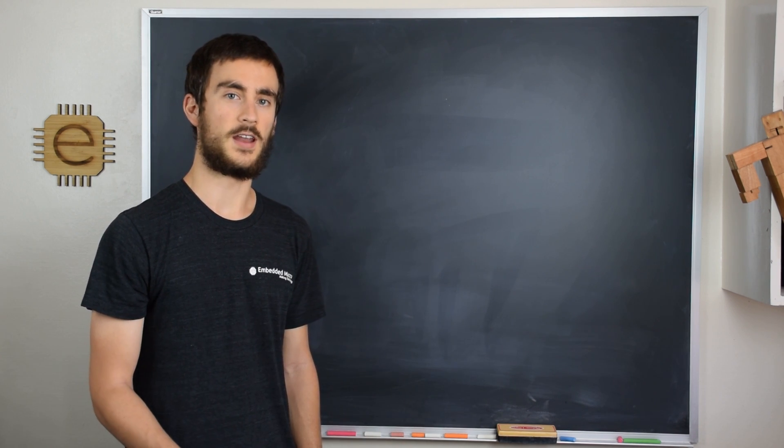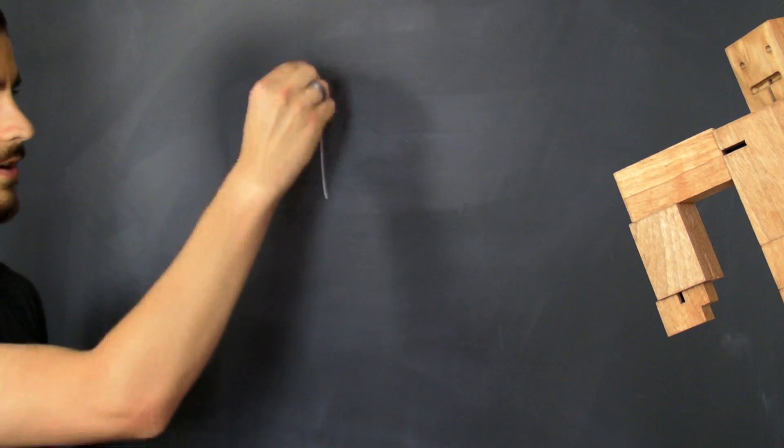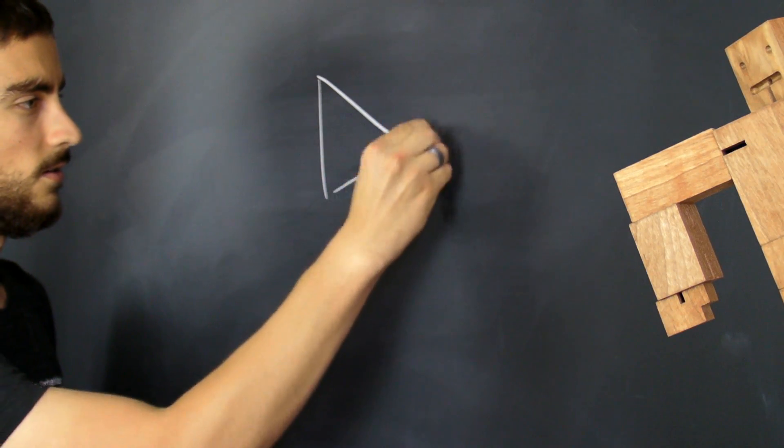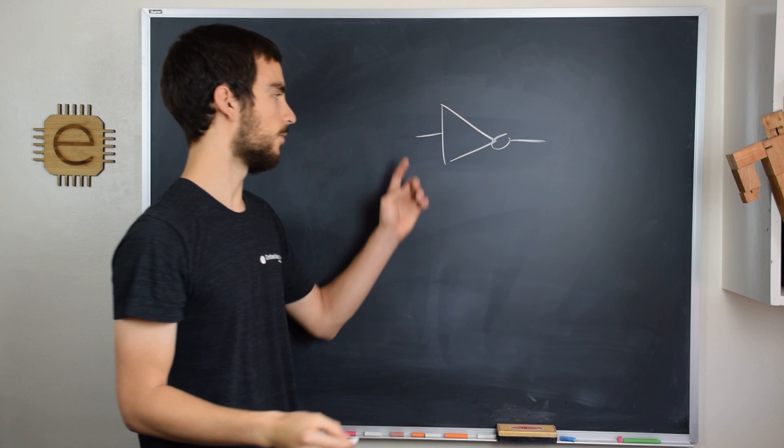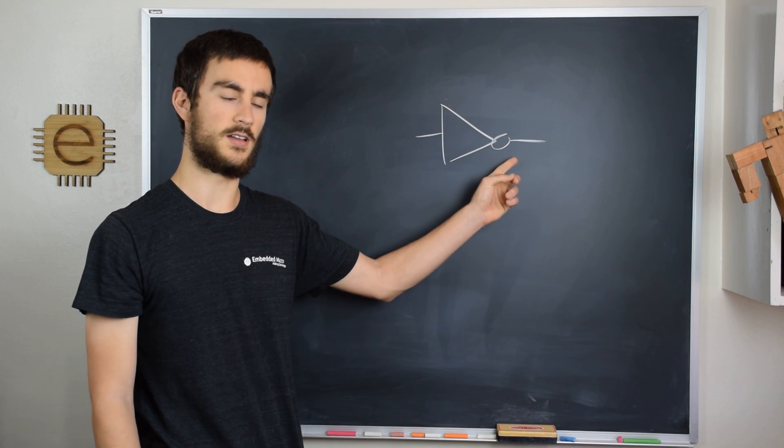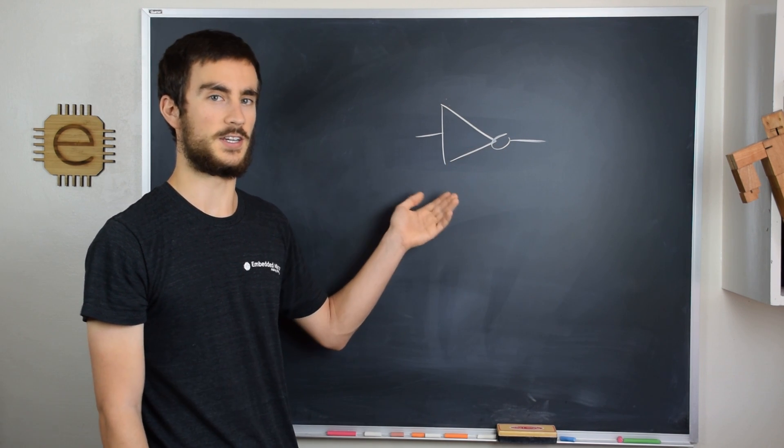First, I'm going to be talking about the NOT gate. The symbol for a NOT gate looks something like this, where you have a single input and a single output. It's actually the only logic gate that has one input.